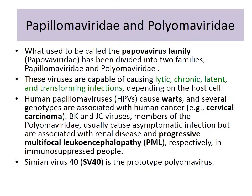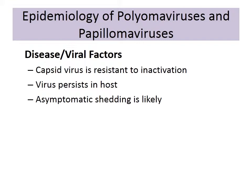Classically we have Papillomaviridae and Polyomaviridae — also called Simian Virus 40, discovered in monkeys in Africa. There are two major groups: polyoma virus and papilloma virus. Since they have a capsid, they are resistant to inactivation and very difficult to destroy. Once they enter your host, they will persist — chronicity, latency, and persistence are key characteristics.